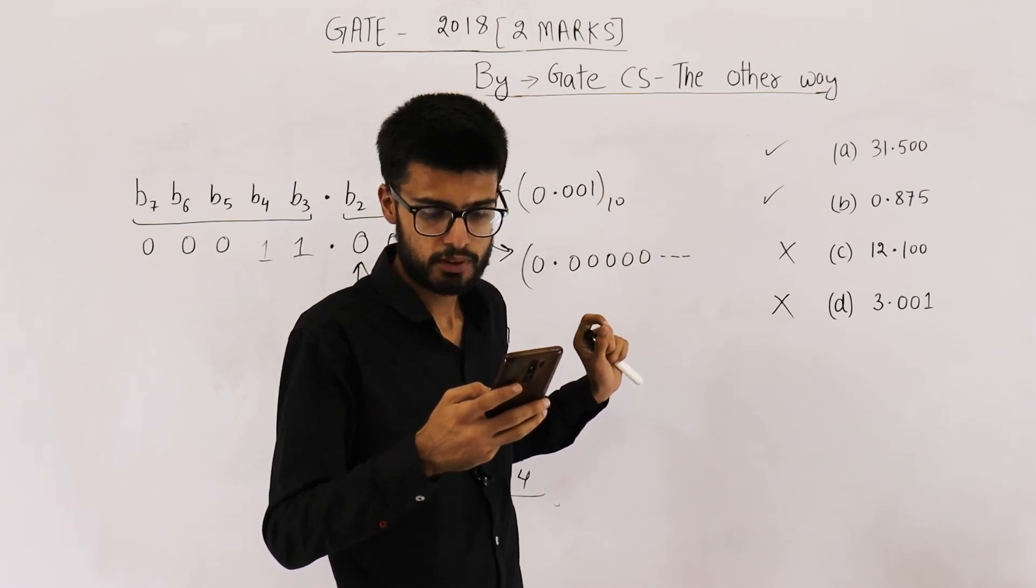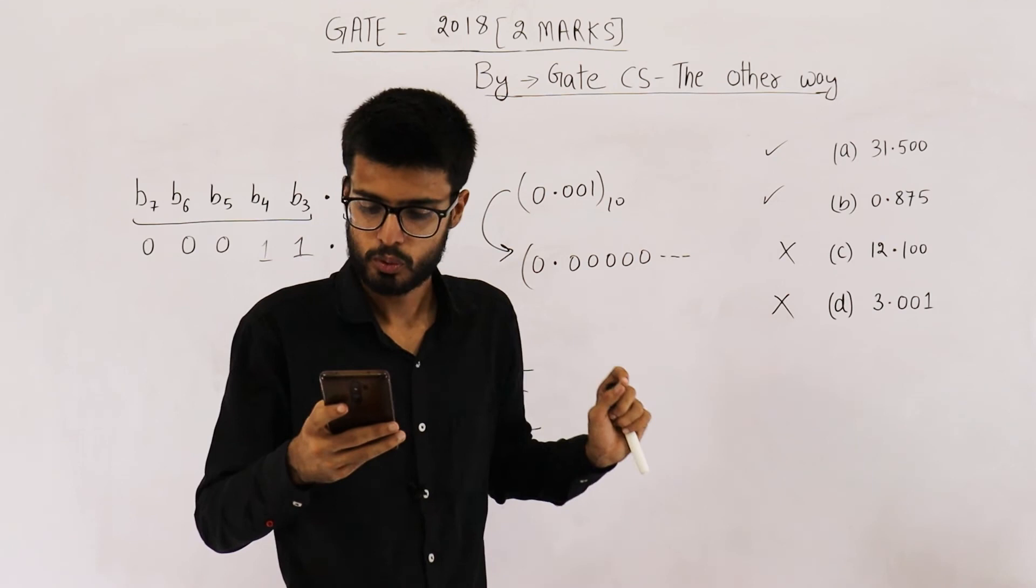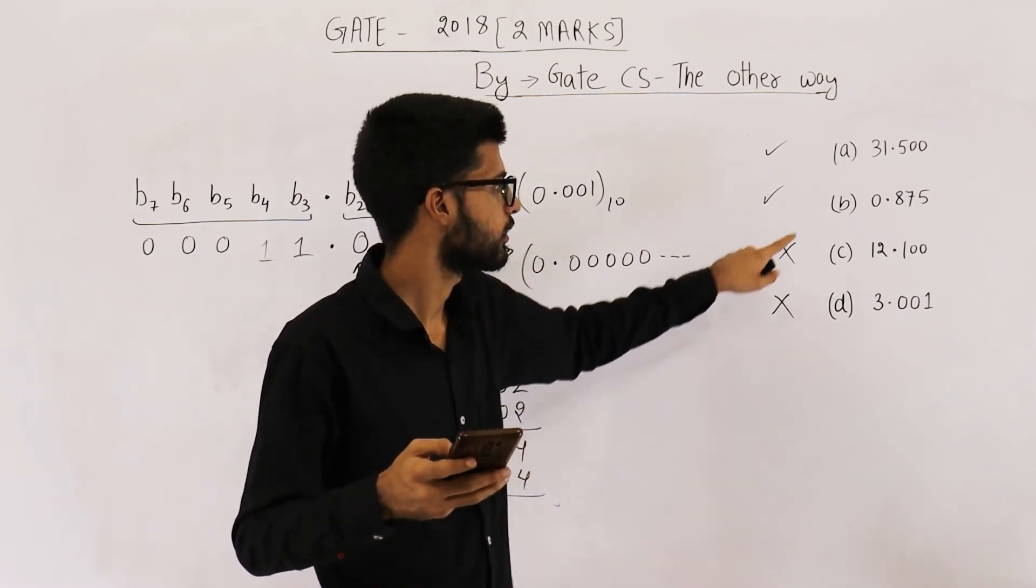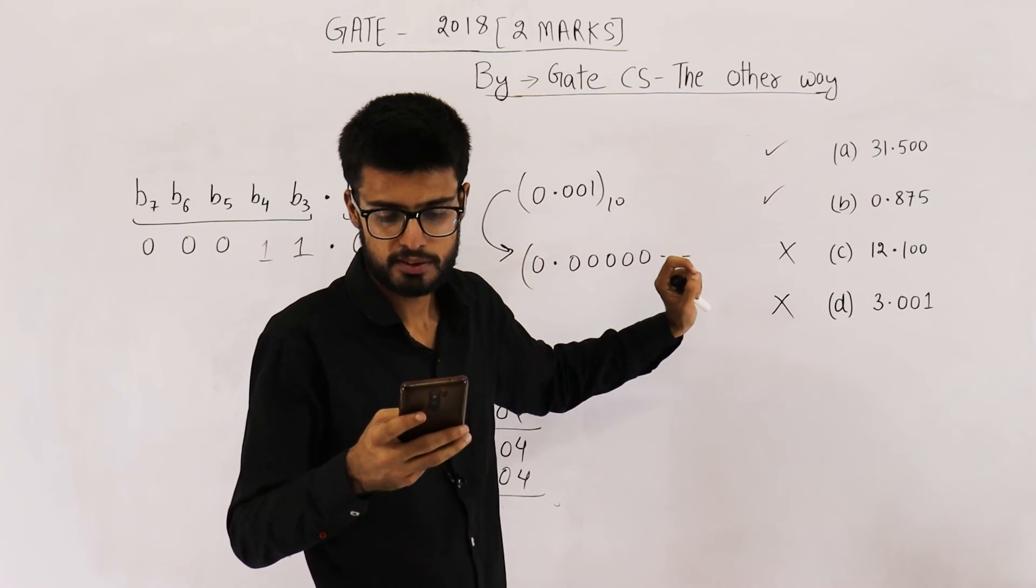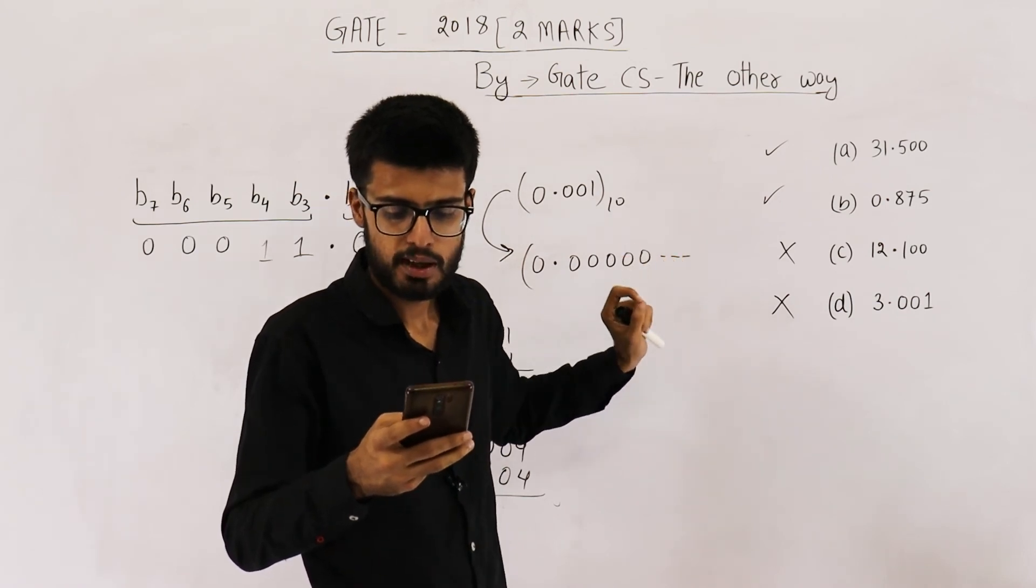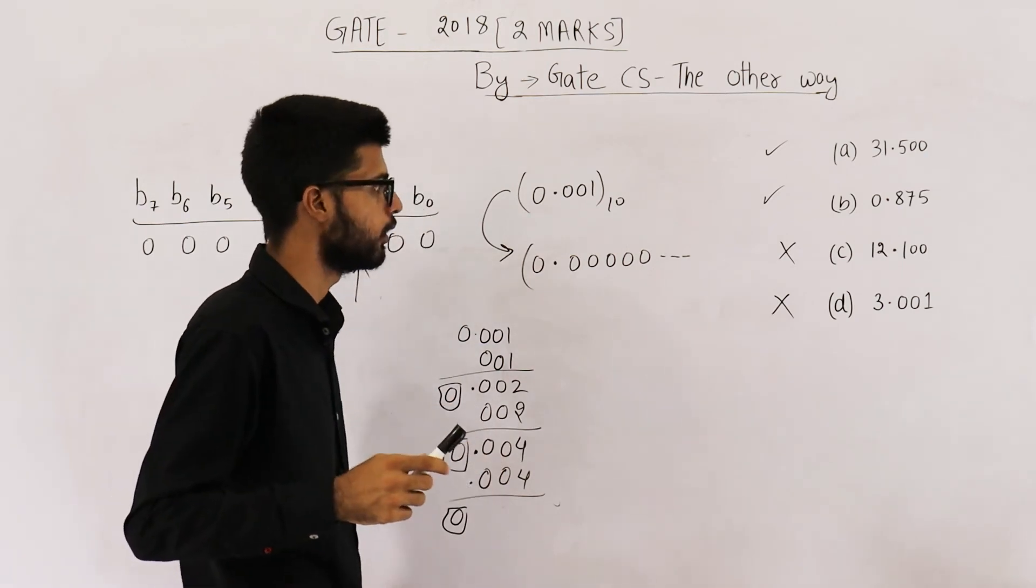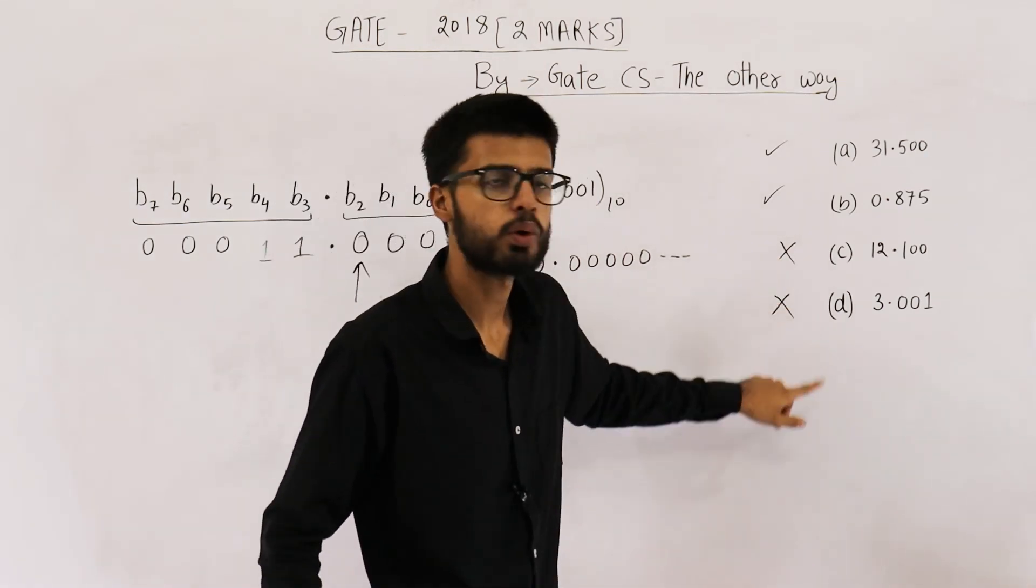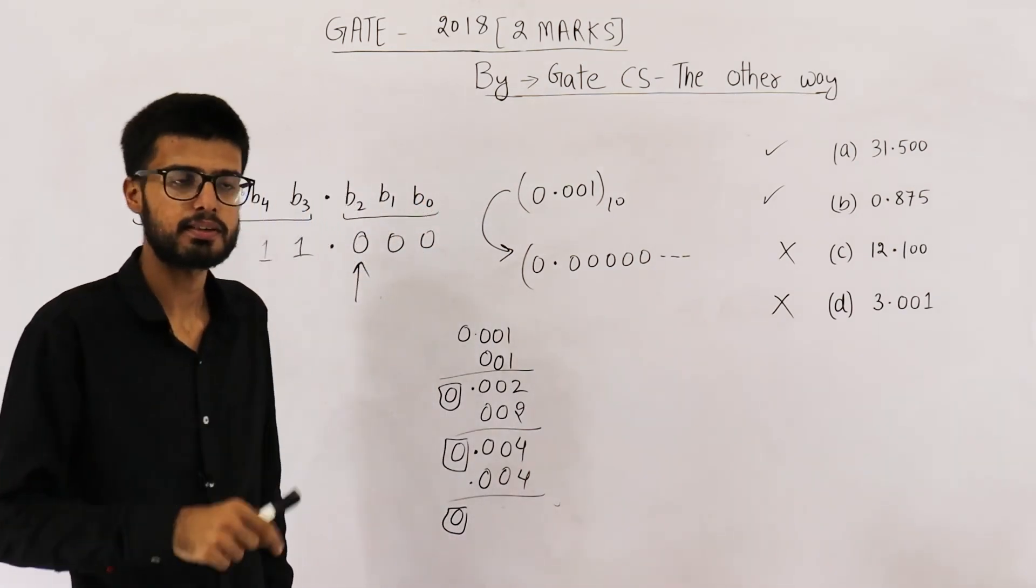So the option which says A and B can be saved. Option 1 is none of them can be saved. So that is incorrect. Option B says only two can be exactly represented. No, one can also be exactly represented. Option C says only three and four cannot be exactly represented. This is correct. Only three and four cannot be exactly represented. So answer is option C.